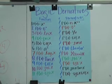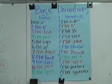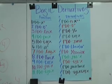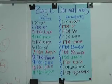Number six is f(x) equals a to the x power. Its prime is ln(a) times a to the x power.